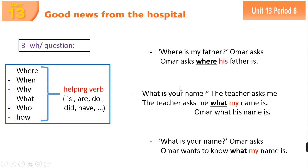Now we have this question: 'Where is my father?' Omar asks. We can change it like this — Omar asks, we put the WH word at the beginning and keep it as it is. When we report the sentence, we change the place of the verb. The verb always comes after the subject. So it becomes: Omar asks where his father is. We change 'my' to 'his' and put the verb after the subject.